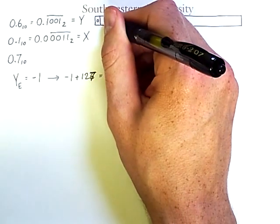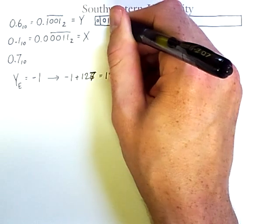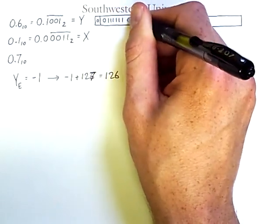So we'll have negative 1 plus 127 to get a value of 126, which is stored here. And the binary representation for 126 is 01111110.